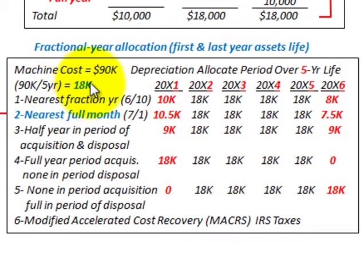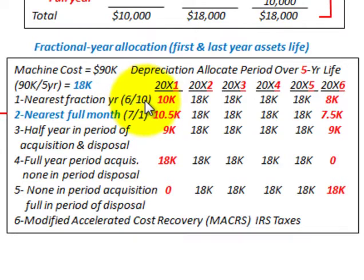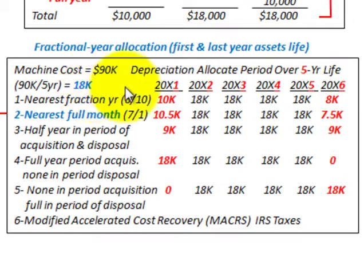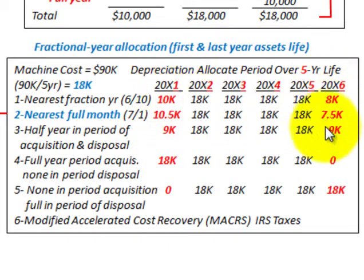Method 1 — Nearest fraction of the year: This is what we calculated above using the fractional year starting June 10th. For 20x1 we get $10,000, then $18,000 for each subsequent full year, and the remaining balance goes to 20x6 at $8,000. You're concentrating only on your beginning and ending amounts: $10,000 plus $8,000 equals $18,000.